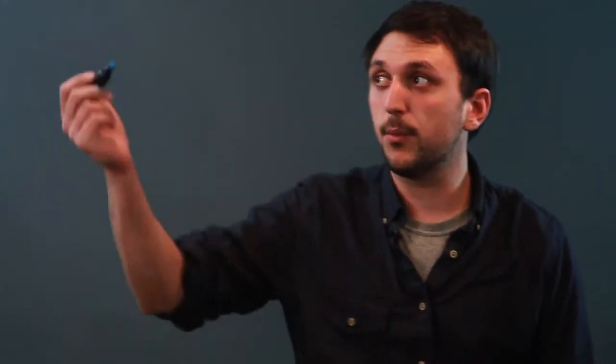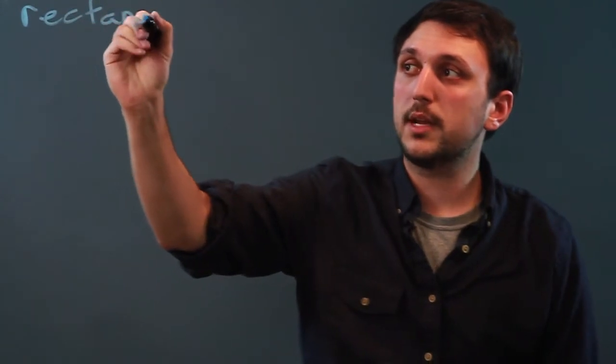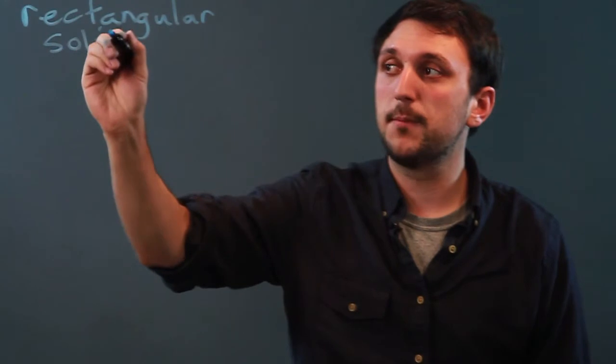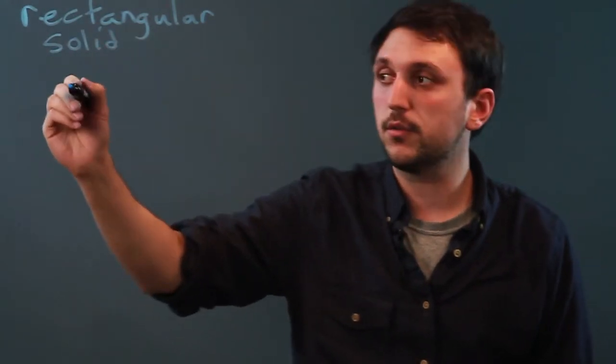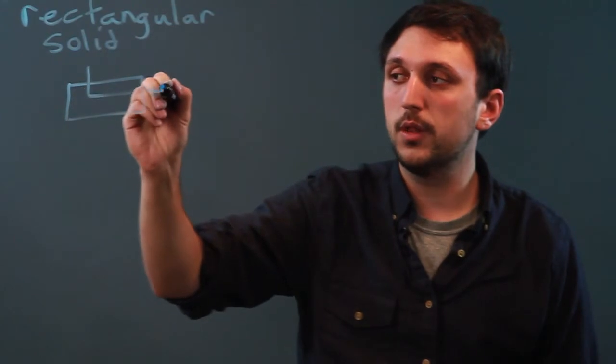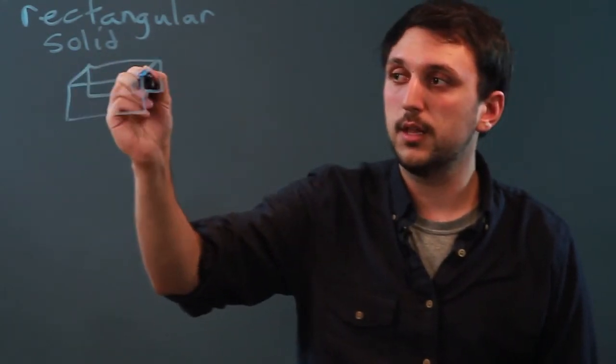The first three-dimensional shape that we're going to look at is a rectangular solid. A rectangular solid is a four-sided three-dimensional shape comprised of all rectangles. The way we draw one is you draw a rectangle, and then draw another one that's somewhat inside of the other, and then you just connect the lines.